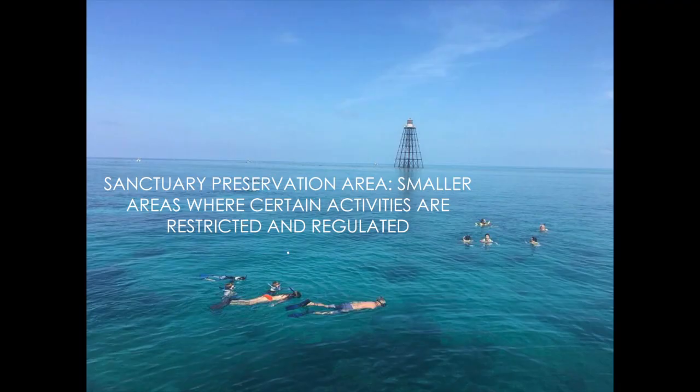The next one is a sanctuary preservation area — a small area where certain activities are restricted or regulated. It's a smaller area within a bigger area. The best example I can give is down here: we have the third largest reef in the world, going from Miami all the way to the Dry Tortugas. There are many smaller reefs within that big coral reef that have their own protections — reefs like Hens and Chickens, Alligator Reef, American Shoal, Lew Key, Sand Key, Eastern Dry Rocks — all having different protections. Some you can fish at, some you cannot. These are what we call SPAs, sanctuary preservation areas, managed by the sanctuary.